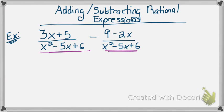So, I'm taking 3x plus 5 minus 9 minus 2x. Remember when you're subtracting to distribute your negative sign? So, that's really negative 9, and that's really going to give me positive 2x.